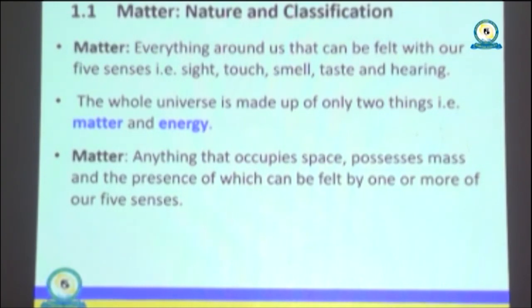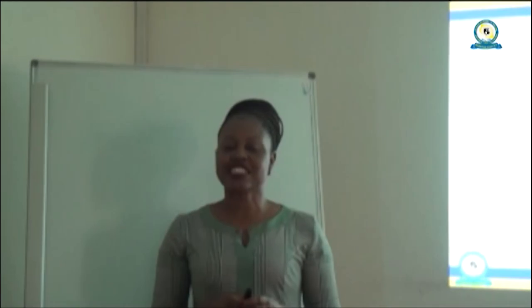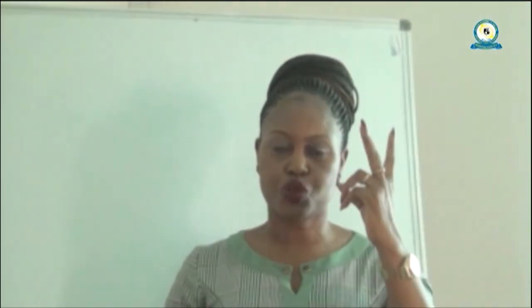So the whole universe is actually made up of only two things: matter and energy. Matter is anything that occupies space, has mass, and whose presence can be felt by one or more of our five senses. Matter can be classified by two main ways: the first is physical classification of matter and the second is chemical classification of matter.